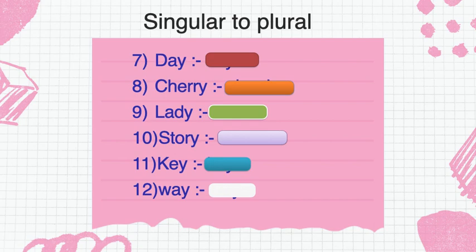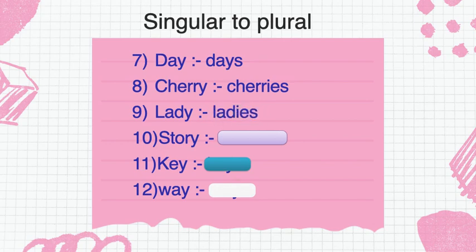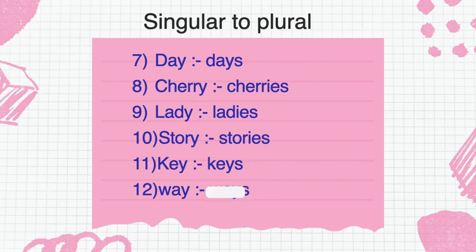Key — keys. Cherry — cherries. Lady — ladies. Story — stories. Way — ways. So these are some examples.